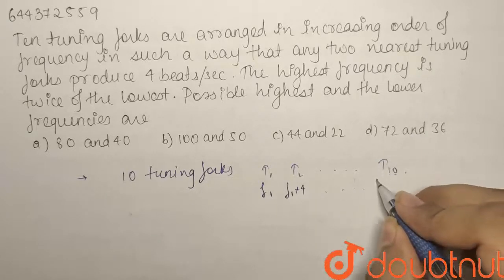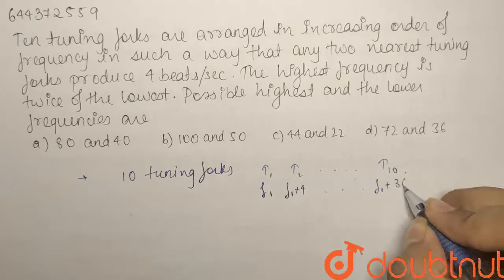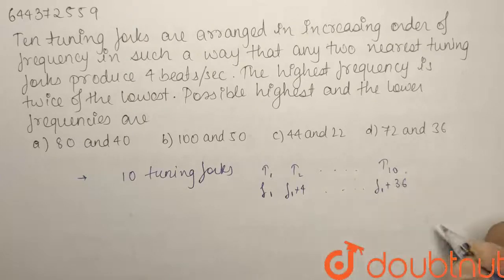And similarly, if you have a look at T10, so by arithmetic progression you will know that T10 will be F1 plus 9 into 4, that is 36. That is 10 minus 1 into D, D is 4, so it will be 36.